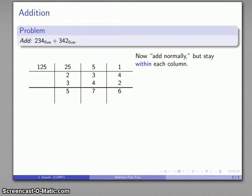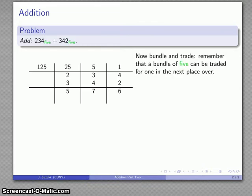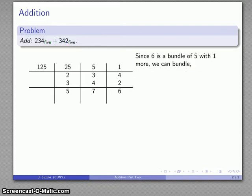Because we're working in base 5, my bundling and trading says that I can take five of anything for one in the next place over. Starting with the right, 6 is a bundle of 5 with 1 more, so I can break that 6 apart—it's really a 5 and a 1. This bundle of 5 I can trade for one more in the next place.